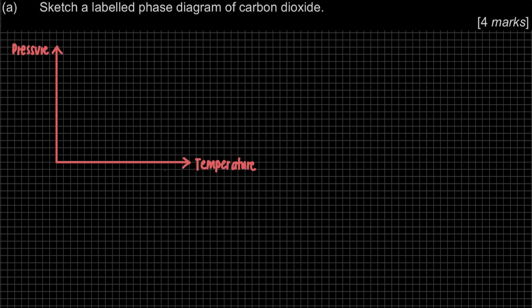After we have drawn the axes, we have to draw the shape. In our syllabus, we only learn about CO2 and H2O. CO2 has the shape of a branching tree — like this. H2O is the exception — it looks like this.